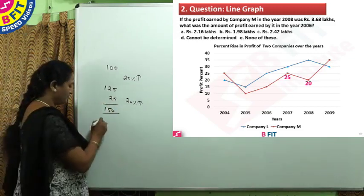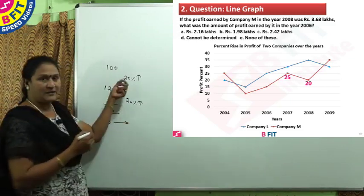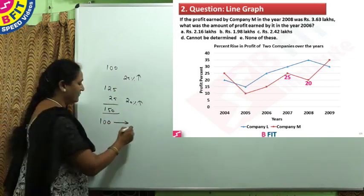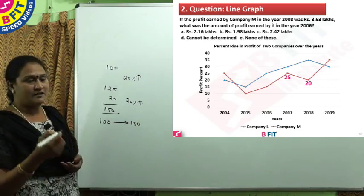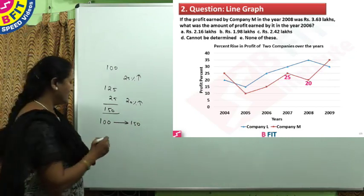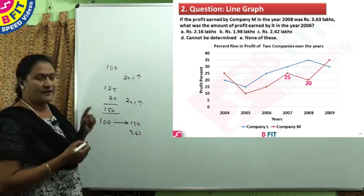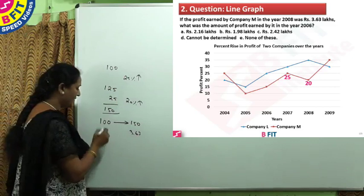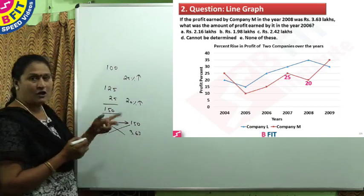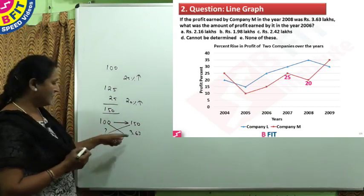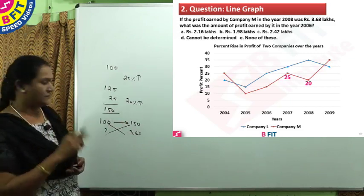So if we take 100 in 2006, after the two increases of 25% and 20%, we get 150 for 2008. But the actual value given for 2008 is 3.63. So now using direct proportion — if after the increases of 25% and 20% the value is 3.63, what will the initial value be? Multiplying and dividing with 150, we get the profit earned by company M in the year 2006.